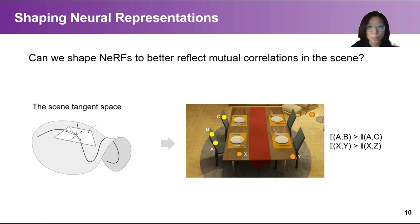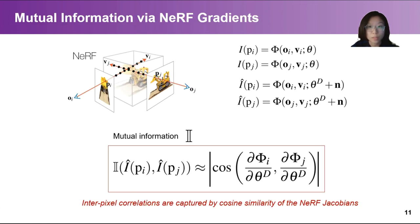So how does perturbation in the tangent space relate to mutual information? With some derivation, we can show that the mutual information between the values of two pixels under uniform perturbation in the network weight's tangent space varies monotonically with the absolute cosine similarity of the NERF Jacobians with respect to the perturbed weights.